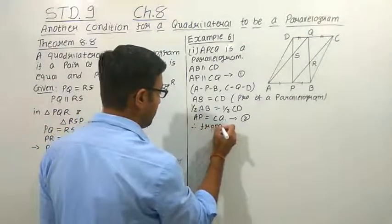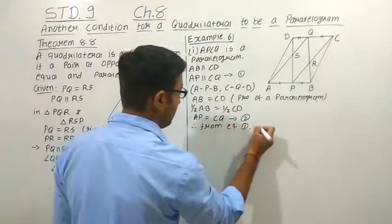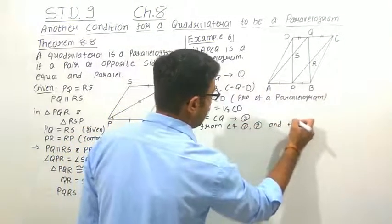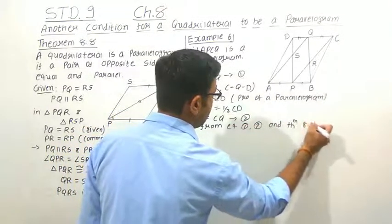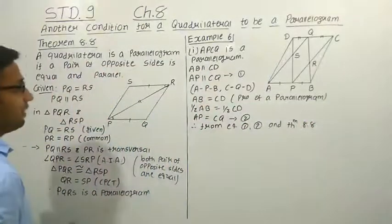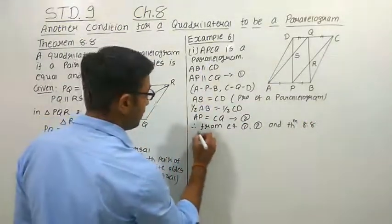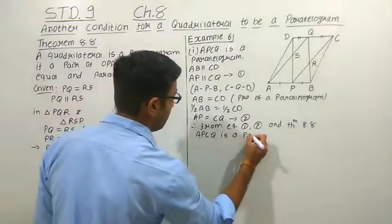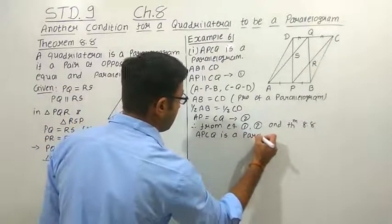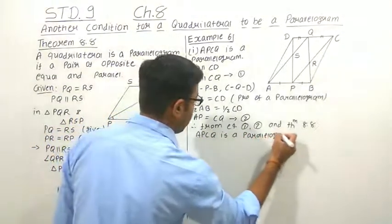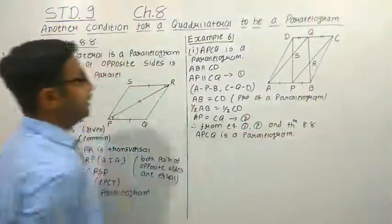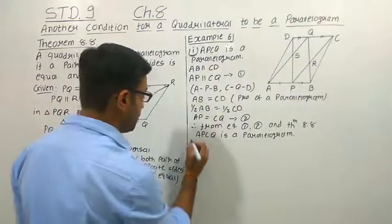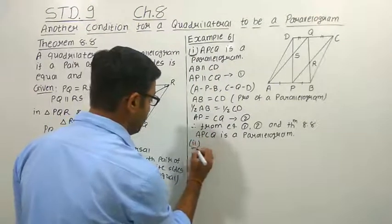From equations 1 and 2 and from theorem 8.8, we can say that APCQ is a parallelogram. So the first thing we had to prove — that APCQ is a parallelogram — is done.